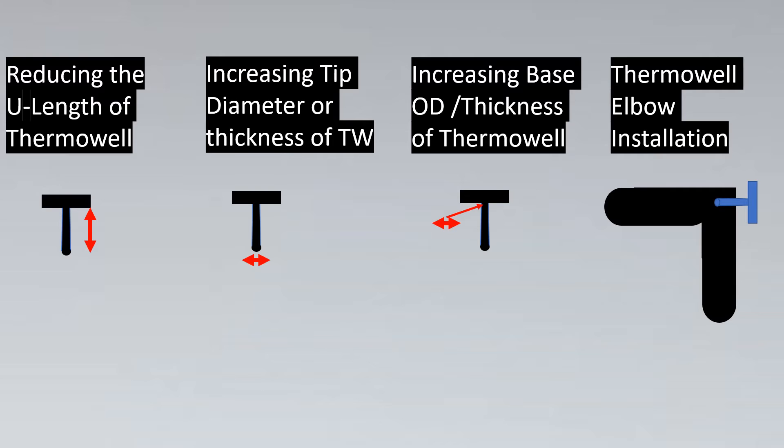If you imagine this is an elbow and we insert a thermowell here, the tip as per ASME PTC 19.3 should be facing towards the flow, that is the recommended installation practice. So here's the flow, and what happens is majority of the velocity is hitting the tip, so the probability for von Kármán vortices to be formed reduces greatly. This is another way you can use if your wake frequency calculation is failing for your thermowell.